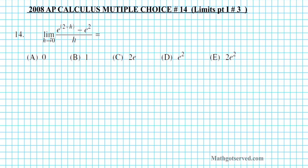We define the limit as h approaches zero of e to the two plus h minus e to the second power over h. Now do you recognize what this is? This is a definition of something — this is the limit definition of the derivative. This is not just a derivative, but it is a derivative evaluated at a specific x value.